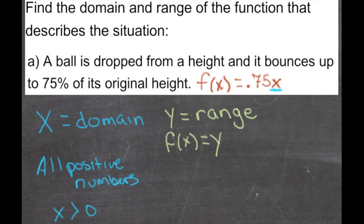Now on the other side here, the range, these are the numbers that are going to come out of our function. Now if x is any positive number, and we multiply that positive number by 0.75, y is also going to be a positive number.